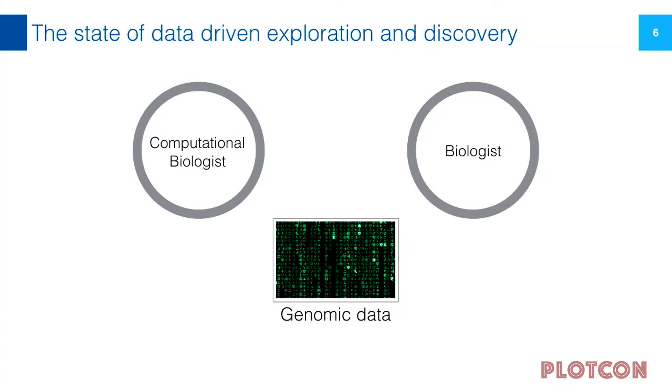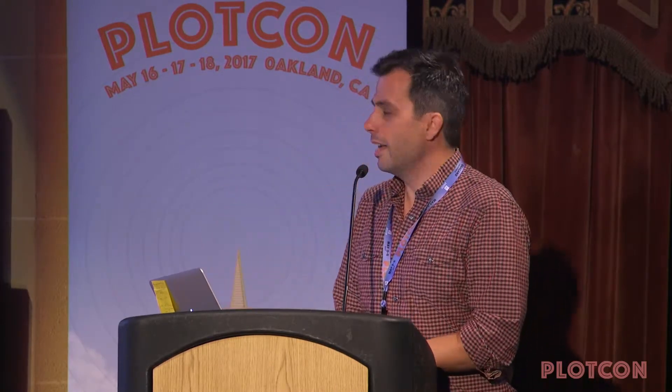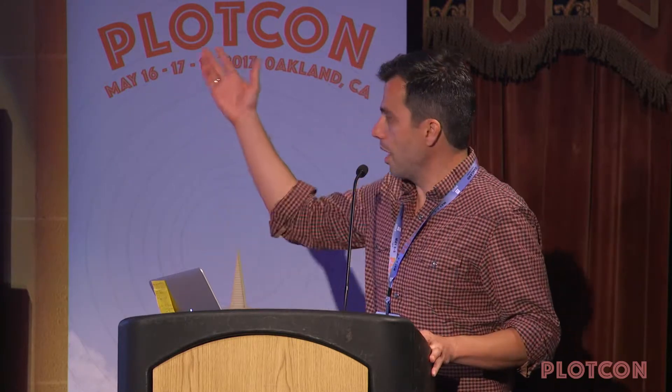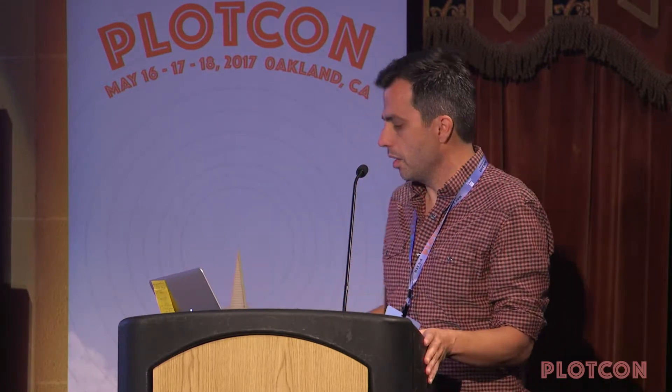This is an overview of what the current state of data-driven exploration and discovery looks like in the field. You have two different types of scientists who want to interrogate and interact with data to understand what cells, tissues, or larger physiologies are doing. These scientists interact with data and ask different types of questions in very different ways. A biologist might want to look at the expression pattern of a favorite gene or pathway across a number of samples, while a computational biologist will want to do sophisticated data science analyses.